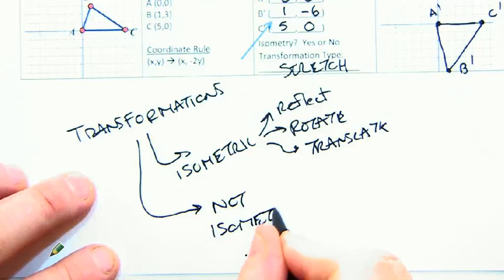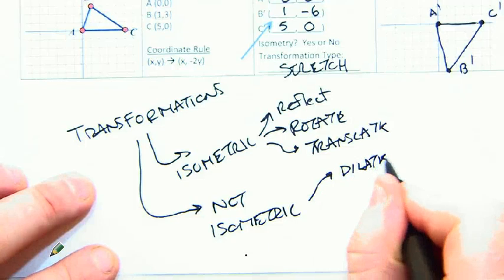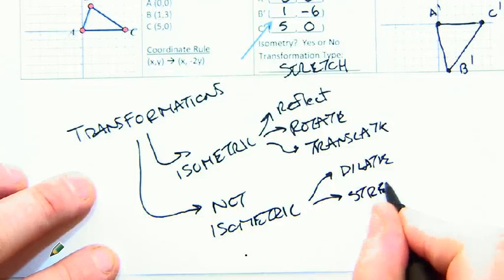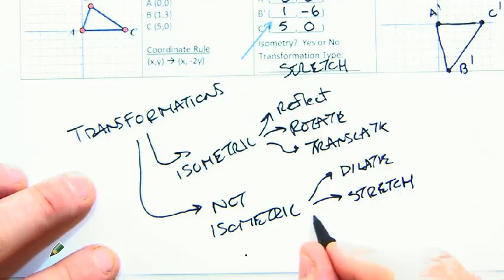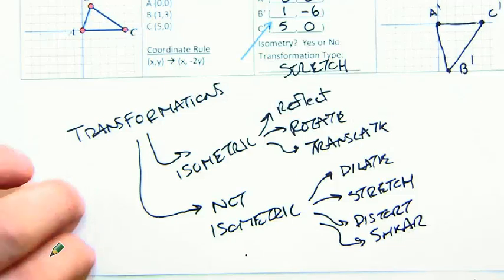And we also learned that there are ones that are not isometric. And these ones are, at least some of the ones we know so far, dilation. We know also stretch. And later we'll look at other ones, maybe distortion or another one called shearing we may look at. All right, great.